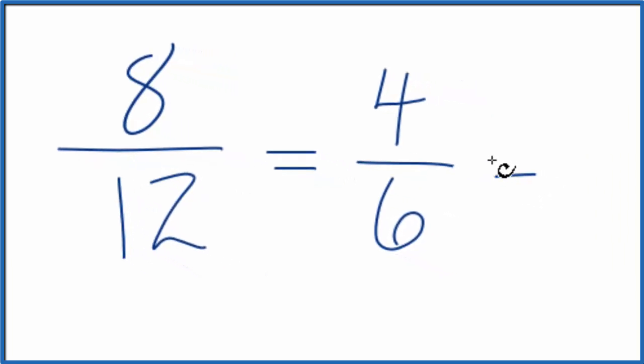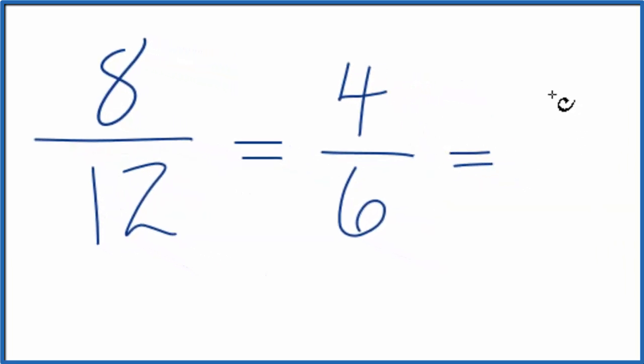So we have 4 sixths. We can divide this again. 4 divided by 2 would be 2. 6 divided by 2 is 3.